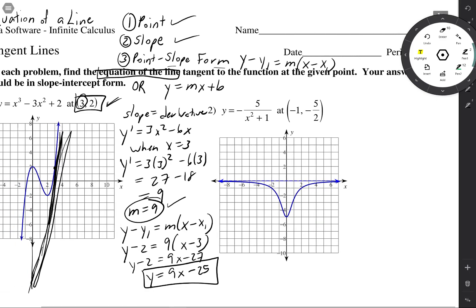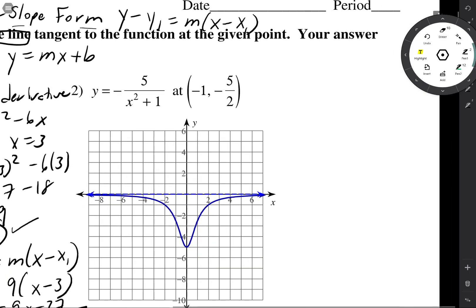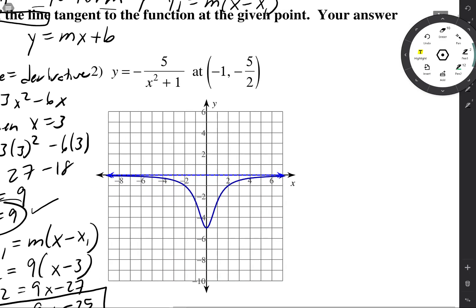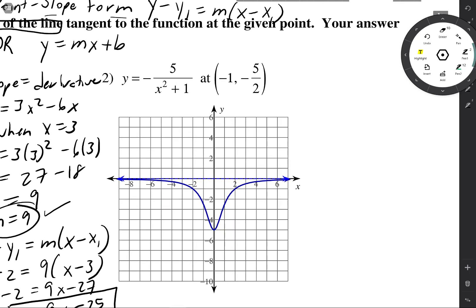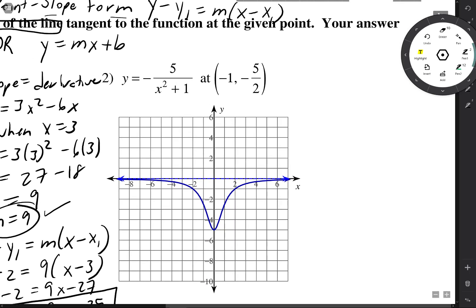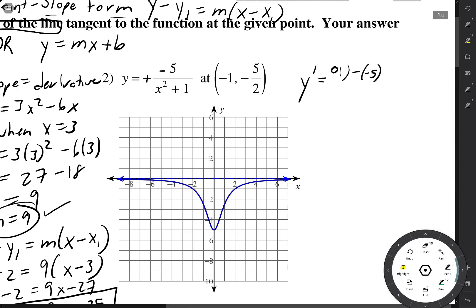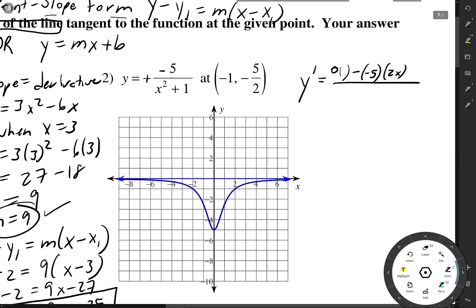Alright, we do it again. I need the derivative of this function, so I'm going to rewrite it as plus a negative to make it easier. Using the quotient rule: the derivative of the top is 0, so that term drops, and then subtract the top times the derivative of the bottom, which is 2x, all over the bottom squared.